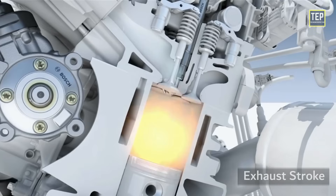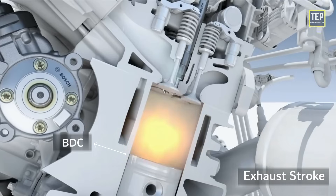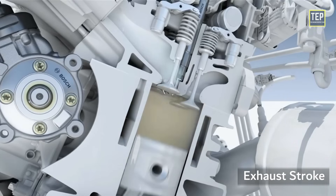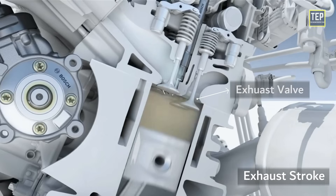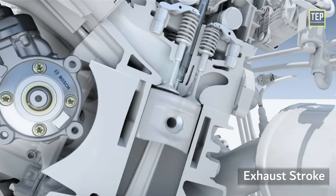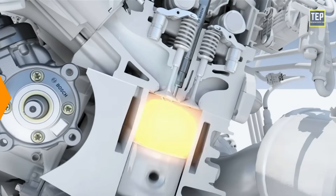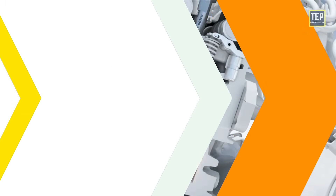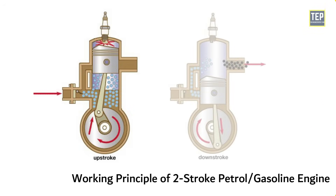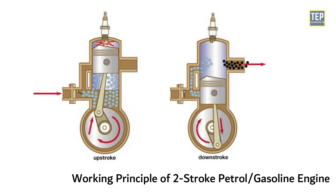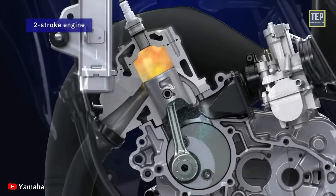Exhaust stroke: the piston reaches bottom dead center and starts moving up. The burnt gases are pushed out by the piston and escape through the exhaust valve. Before the piston reaches top dead center, the inlet valve is opened and the cycle is repeated.